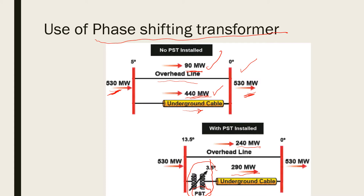Practically, it is not possible to get exactly equal power, because it is a tap changer type of transformer. We cannot get exactly equal amounts of power. But in simulation, we can study equal power flow in each line. That is the use of this phase shifting transformer.